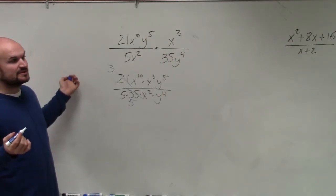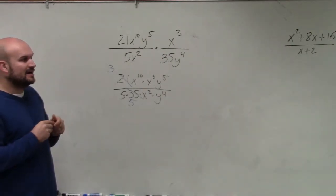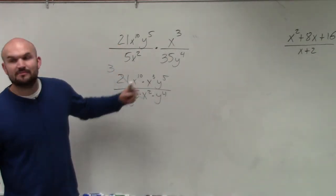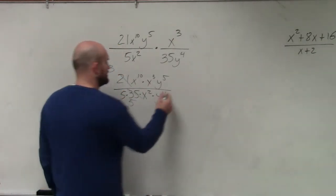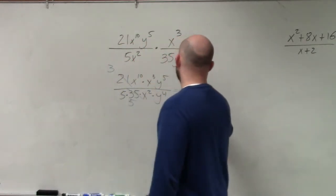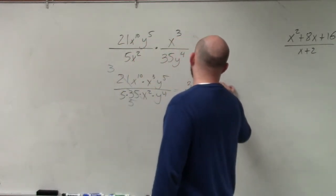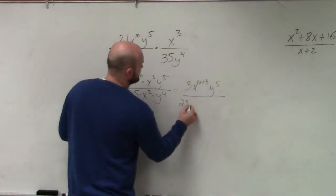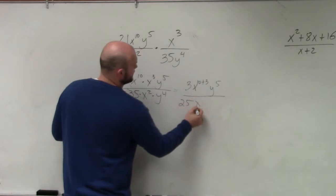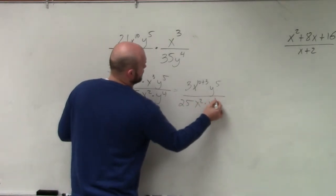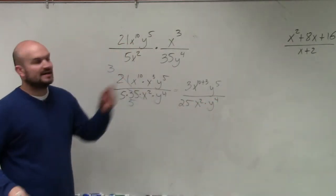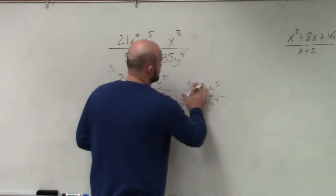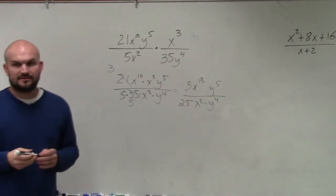Now I can apply the rules of exponents. So now I've simplified the numbers. Now let's apply the rules of exponents to simplify x to the 10th and x cubed. So what I get when I do that is I get 3 x to the 10 plus 3, y to the fifth. All over 5 times 5 is 25. And I can't really do anything with these two y to the fourth. So x to the 10 plus 3 is going to be x to the 13th power.